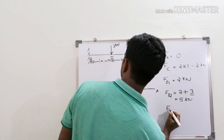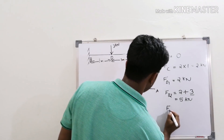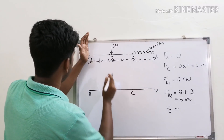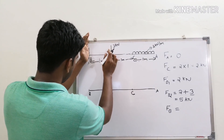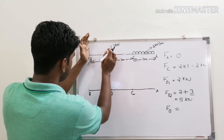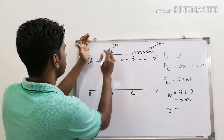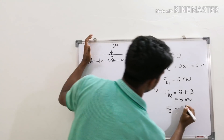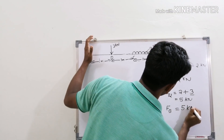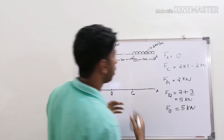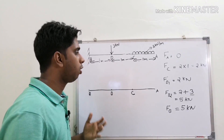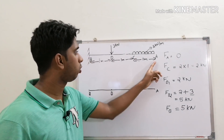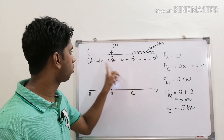After the 3 kN concentrated load, there is no further load acting between D and B, so the shear force at B is again 5 kN. We have now found all the shear force values at all the important points.